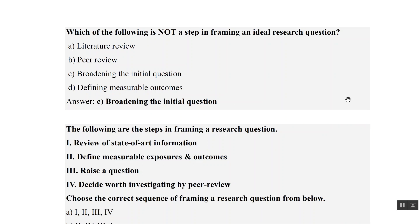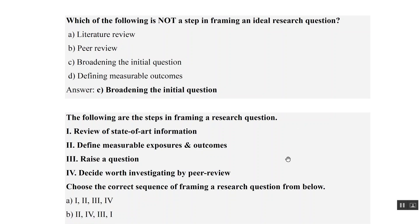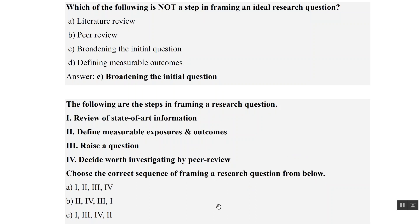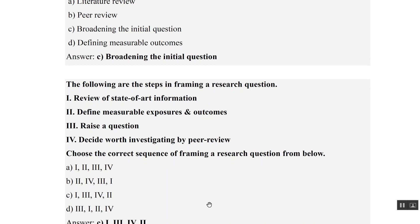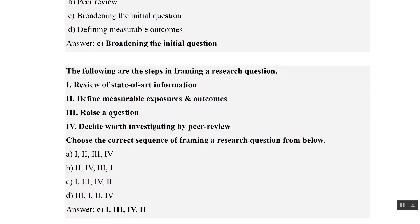Looking at the steps in framing an ideal research question: literature review, peer review, and defining measurable outcomes are all valid steps. 'Broadening the initial question' is not a step — we actually narrow it down and make it more specific, so that is the wrong option. For the correct sequence: first, review the literature; second, raise a question; third, decide if it is worth investigating by peer review; fourth, define measurable exposure and outcome. The correct sequence is option C.